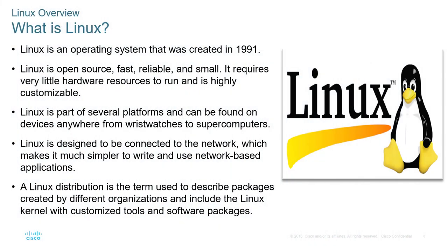So what is Linux? Linux is an operating system that has been around since the early 90s. It's open source, meaning the source code is available — you can review it and modify it. There are still terms of service for using it, but most versions of Linux use the GNU licensing, which allows you to openly modify the code. Linux is classified as fast, reliable, and lightweight, meaning it has a small footprint and requires very little hardware.